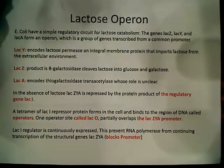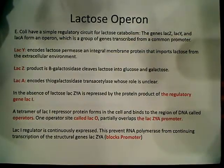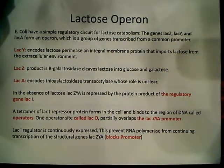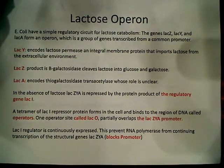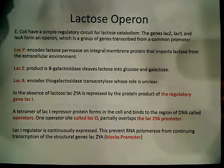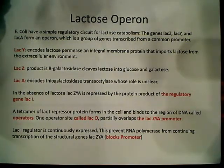In the absence of lactose, this lac operon is repressed by the protein product of the regulatory gene lacI. What's important to know is that you have a repressor protein. This repressor protein is bound at the operator region. There are two important regions: the promoter region, where RNA polymerase is going to bind, and the operator region, where this repressor protein binds. They slightly overlap, and that's how the repressor protein prevents RNA polymerase from binding.